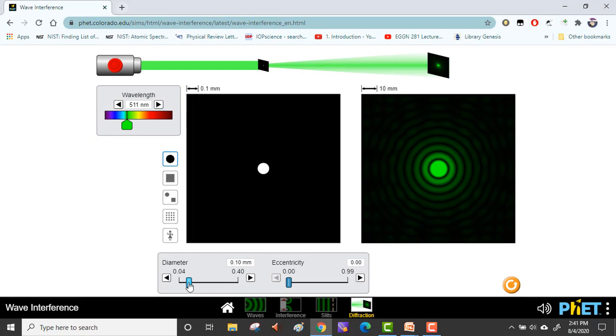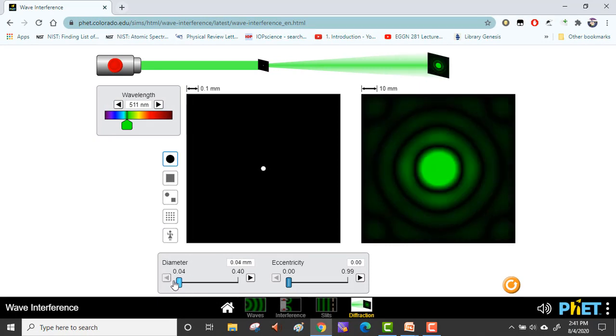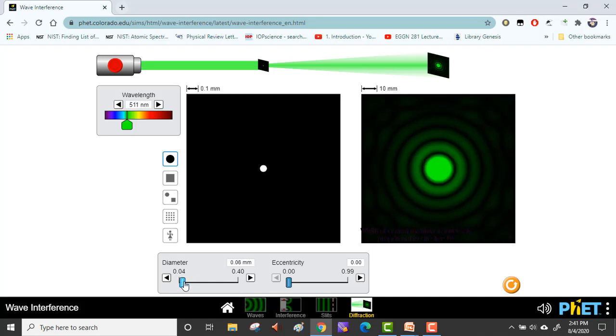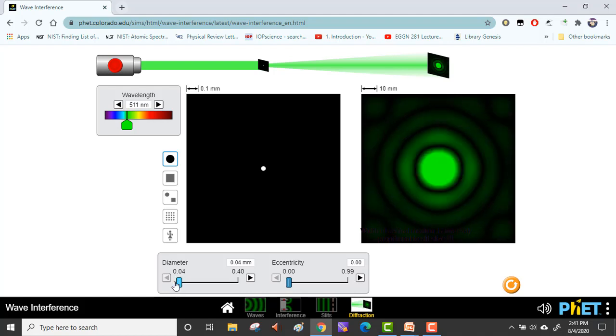Now we make the aperture even smaller. We can see that as we make the aperture small the central spot or the central maxima is getting bigger. Let's do it again. As we reduce the length of the aperture the central spot gets bigger.